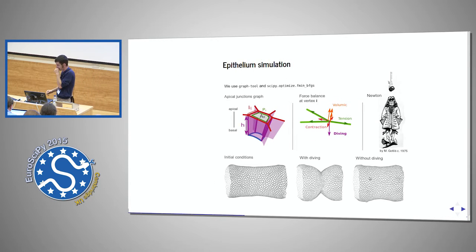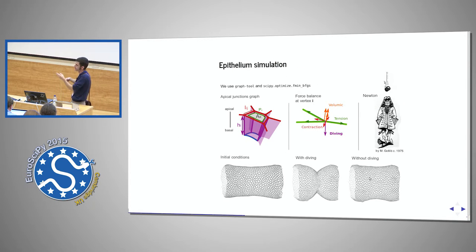So I went to the literature and I re-implemented a 2D model of epithelia, so the epithelium is basically a graph. So I used the graph tool library. I don't know if you know it, but it's worth a look. And a simple scipy optimized function to basically minimize an energy. So that's Broyden-Fletcher-Goldfarb-Shanno here.